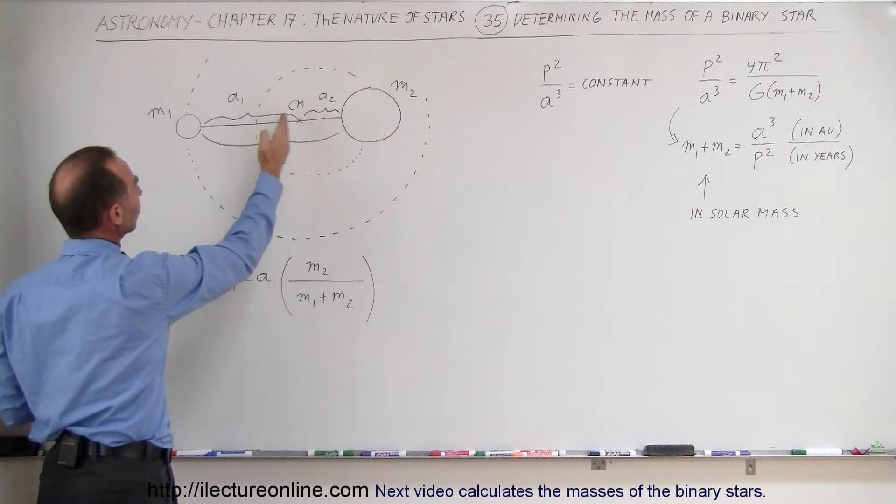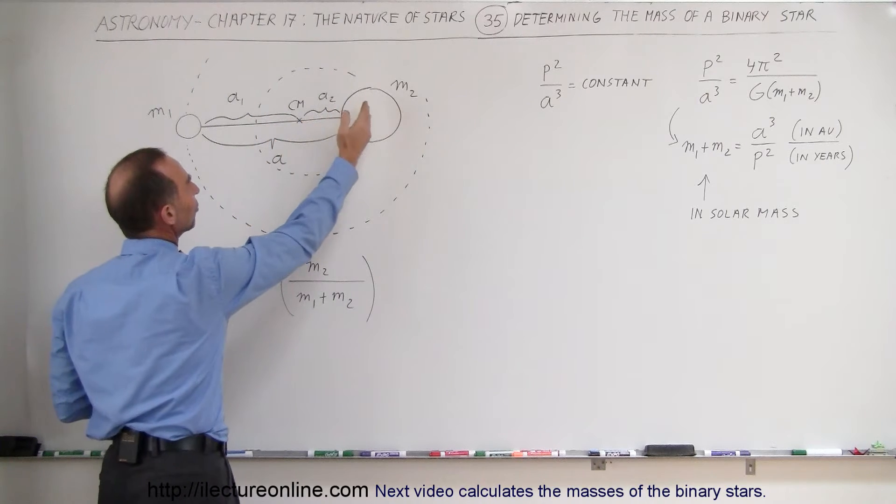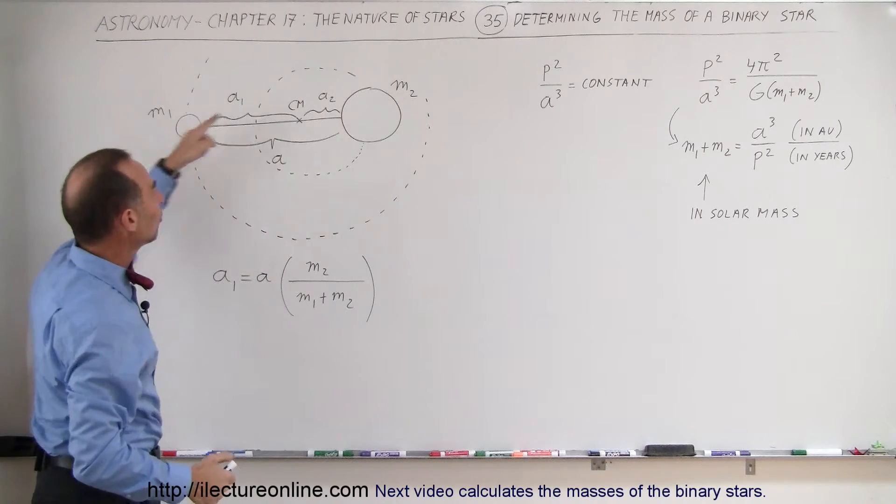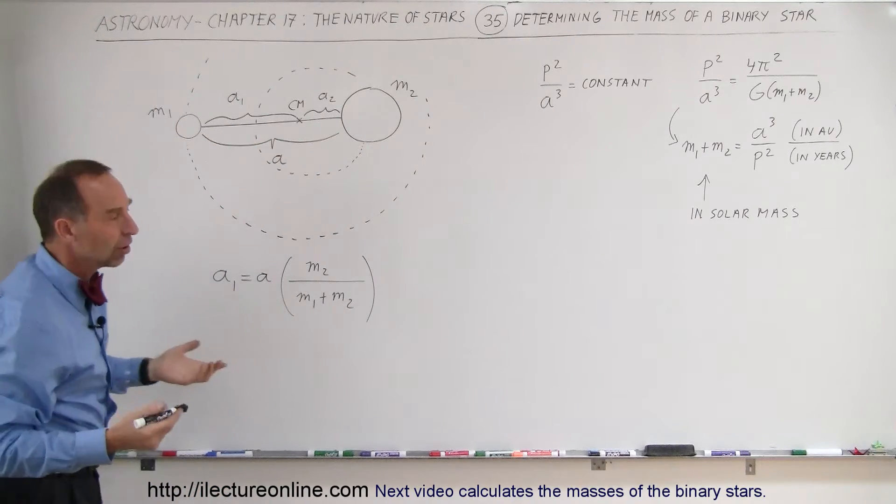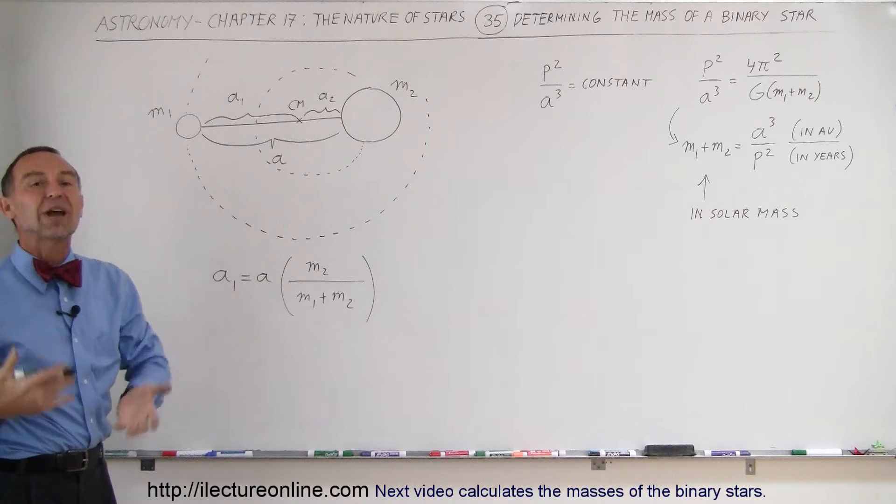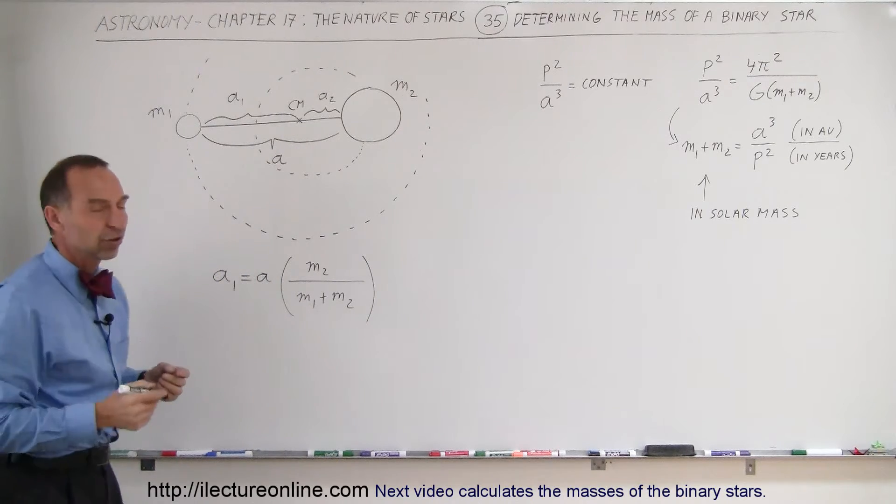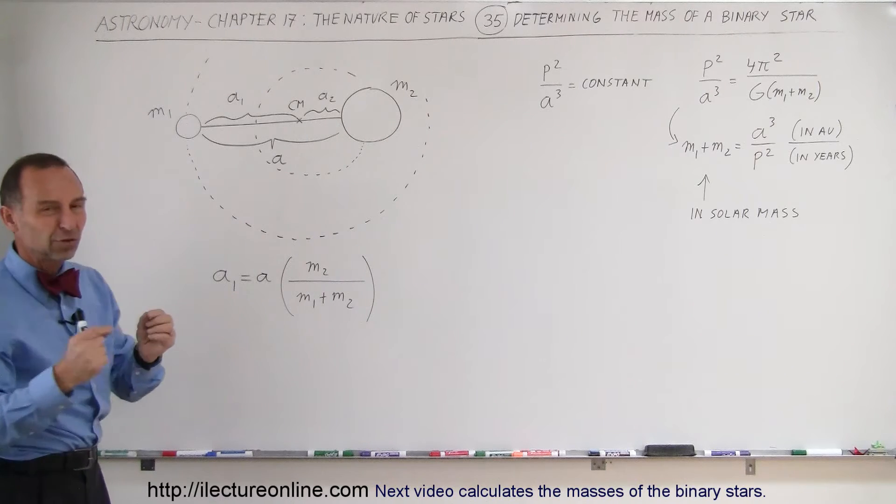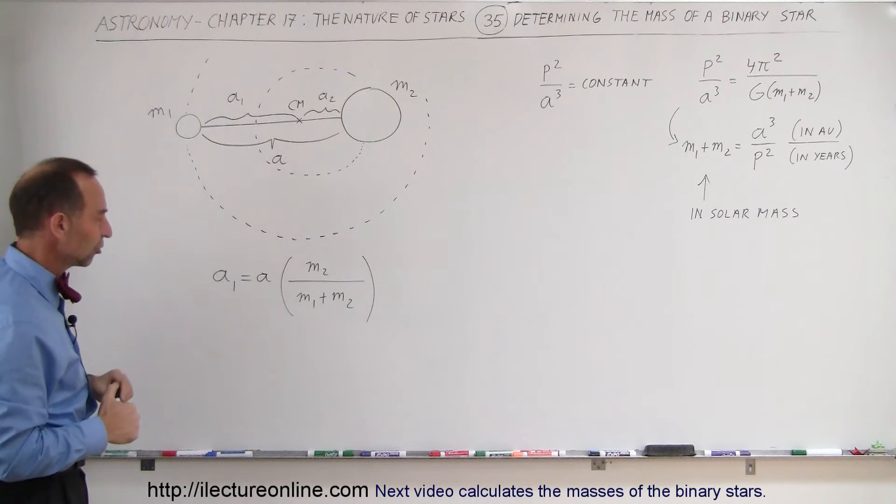A1 is the distance from the small star to the center of mass, and A2 is the distance from the large star to the center of mass. And A here is the distance between the two stars, which is what we call the semi-major axis of the orbit of the small star around the big star. And that will always remain the same, unless of course it's an elliptical orbit and there will be some small changes.